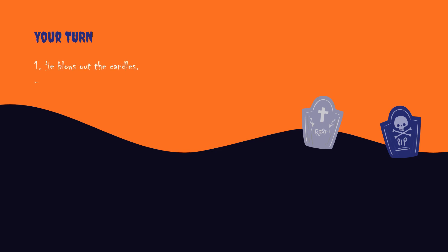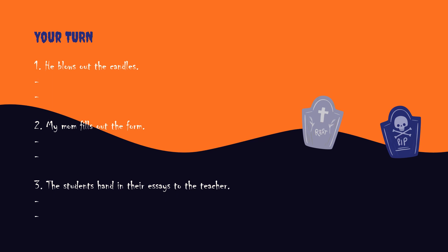Sekarang kamu kerjakan phrasal verb ini dan tuliskan menjadi kalimat seperti yang sudah dijelaskan tadi — pisahkan phrasal verb-nya, taruh objeknya di antara phrasal verb, kemudian ganti objeknya dengan kata ganti yang tepat. Nomor satu: He blows out the candles. Pisahkan menjadi he blows the candles out. Karena 'candles' lebih dari satu, kata gantinya 'them' — he blows them out.